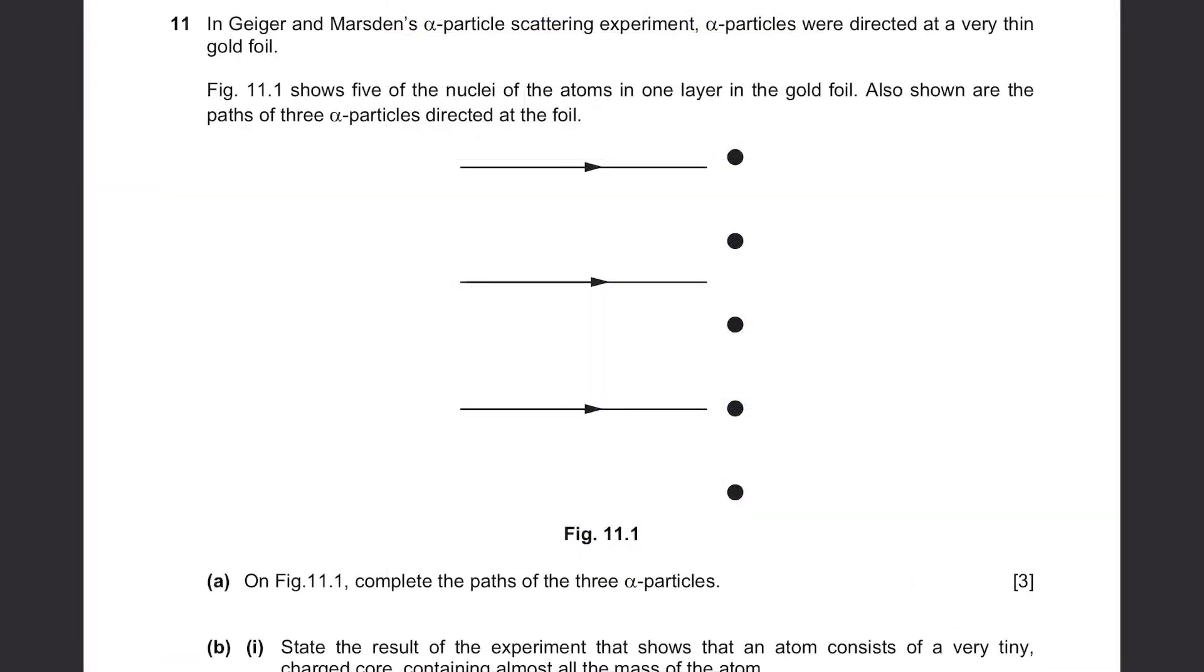Question 11. In Geiger and Marston's alpha particles scattering experiment, alpha particles were directed at a very thin gold foil. Figure 11.1 shows five of the nuclei of the atoms in one layer in the gold foil. Also shown are the paths of three alpha particles directed at the foil. Part A: On figure 11.1, complete the paths of the three alpha particles.